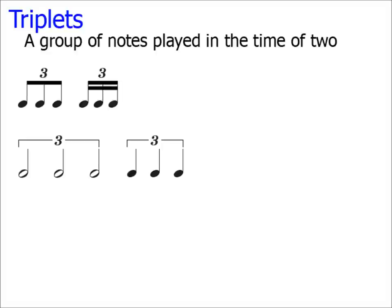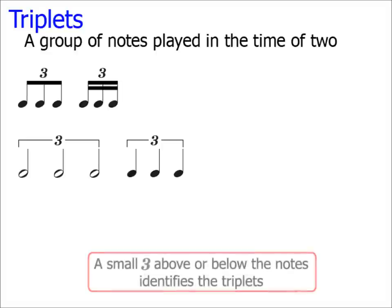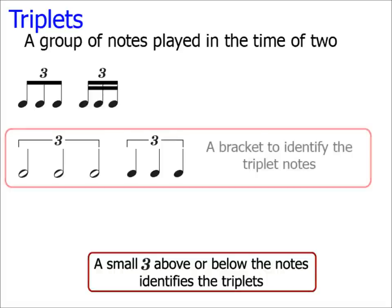All of these are examples of some common triplets you might come across. Firstly, notice how they are identified as triplets by the little three above the notes. Just be aware that the three can sometimes appear below the notes. In these examples, there is a small bracket to clearly identify that the notes are triplets.